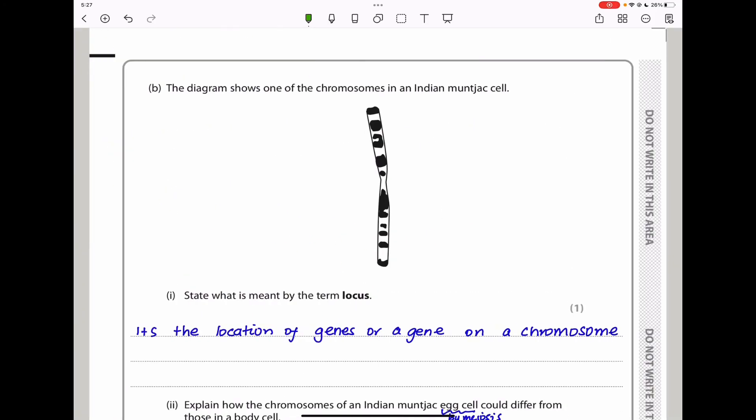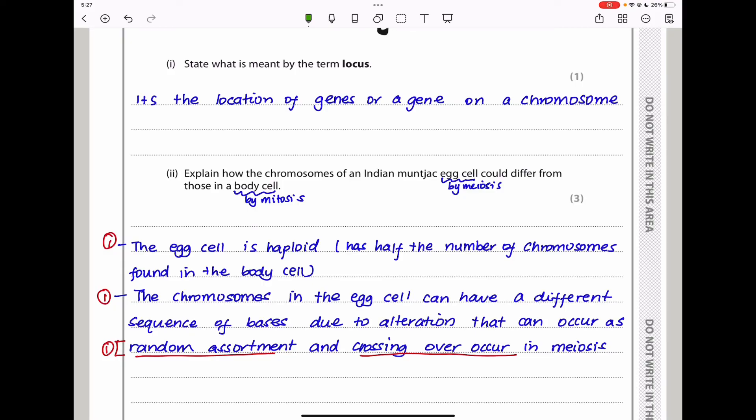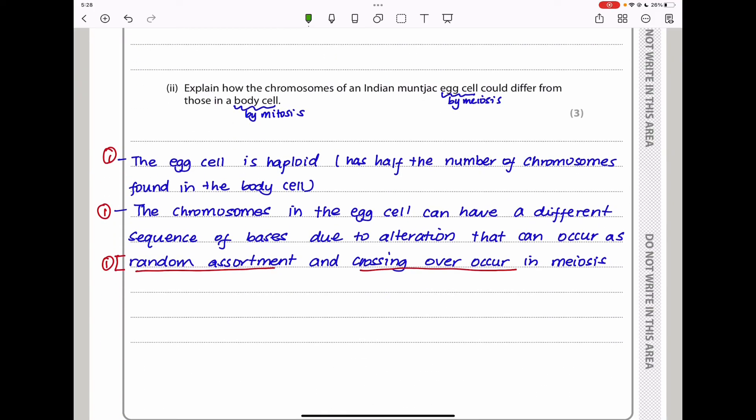The diagram shows one of the chromosomes of an Indian muntjac egg cell. State what is meant by the term locus. A locus is a location of genes or a gene on a chromosome. Explain how the chromosomes of an Indian muntjac egg cell could differ from those of a body cell. We know egg cells are produced by meiosis while body cells by mitosis. Egg cells are haploid while body cells are diploid. The egg cell is haploid, meaning half the number of chromosomes found in the body cell. The chromosomes in the egg cell can have a different sequence of bases due to alterations. Random assortment and crossing over can occur, leading to changes in the sequence of bases or genes present.